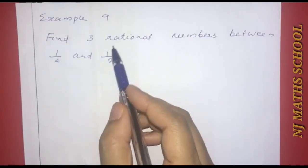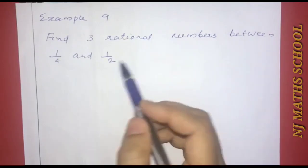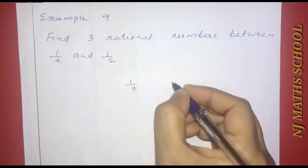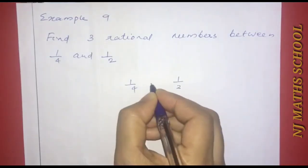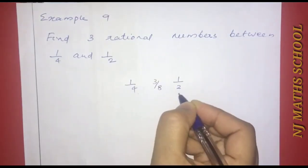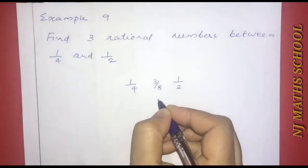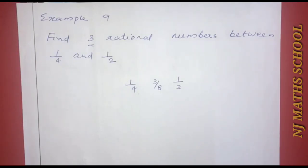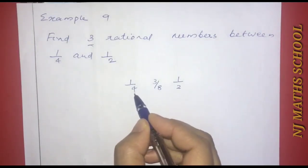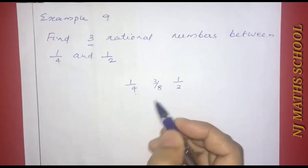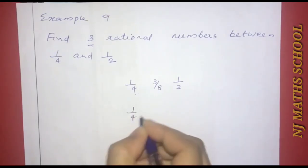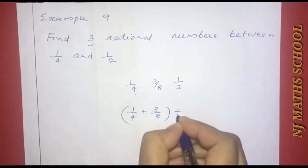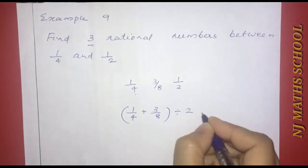Find three rational numbers between 1 by 4 and 1 by 2. From the previous problem, we know the mean of 1 by 4 and 1 by 2 is 3 by 8. Now we find the mean of 1 by 4 and 3 by 8: 1 by 4 plus 3 by 8 divided by 2. Converting 1 by 4 to 2 by 8, we get 2 by 8 plus 3 by 8 equals 5 by 8, divided by 2.